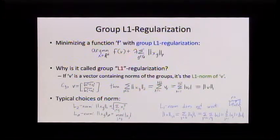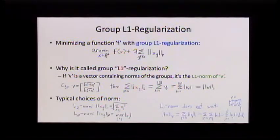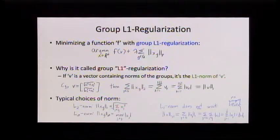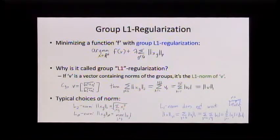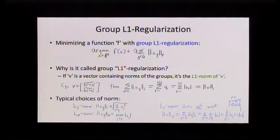You can think of L1 assigning zeros to the v's here. The v's are the norms of the groups, so it sets the whole group to zero. The less obvious part is that they have to both be non-zero at the same time. This is something that people have seen less of than L1 — everybody's seen L1, but this is less common.